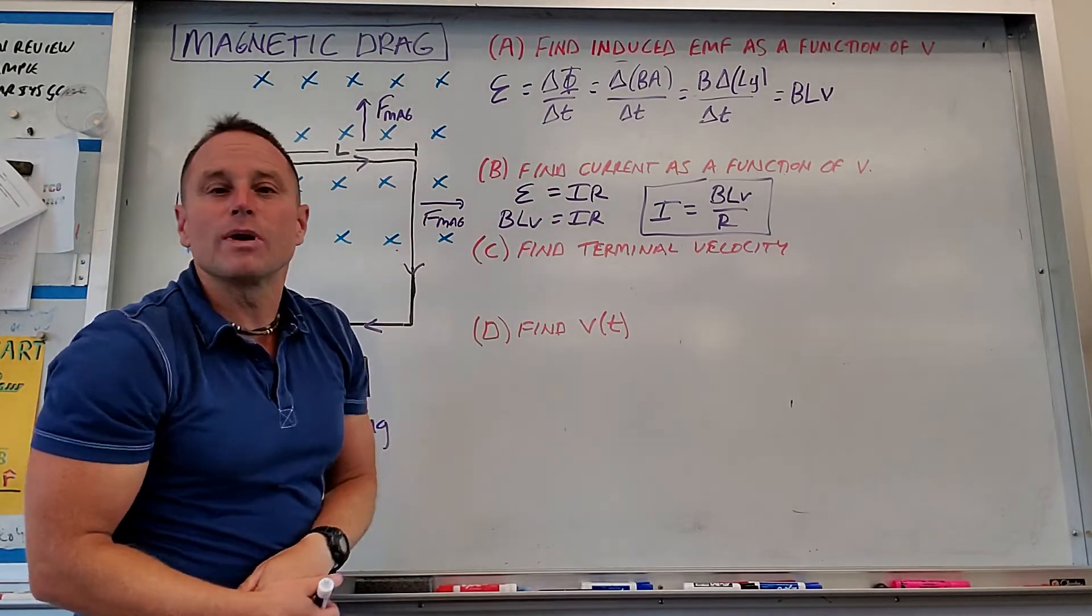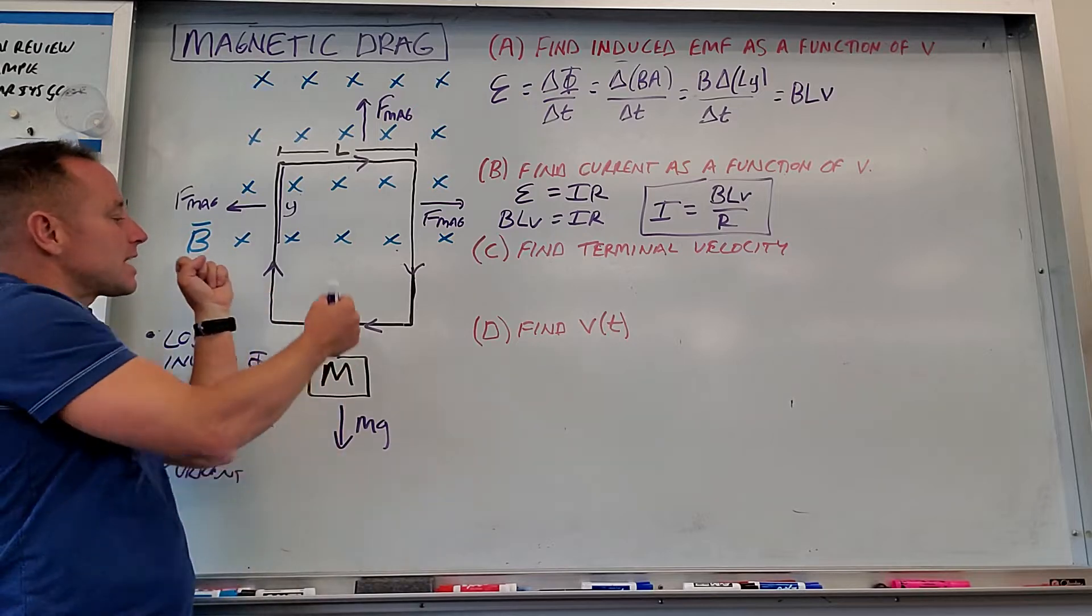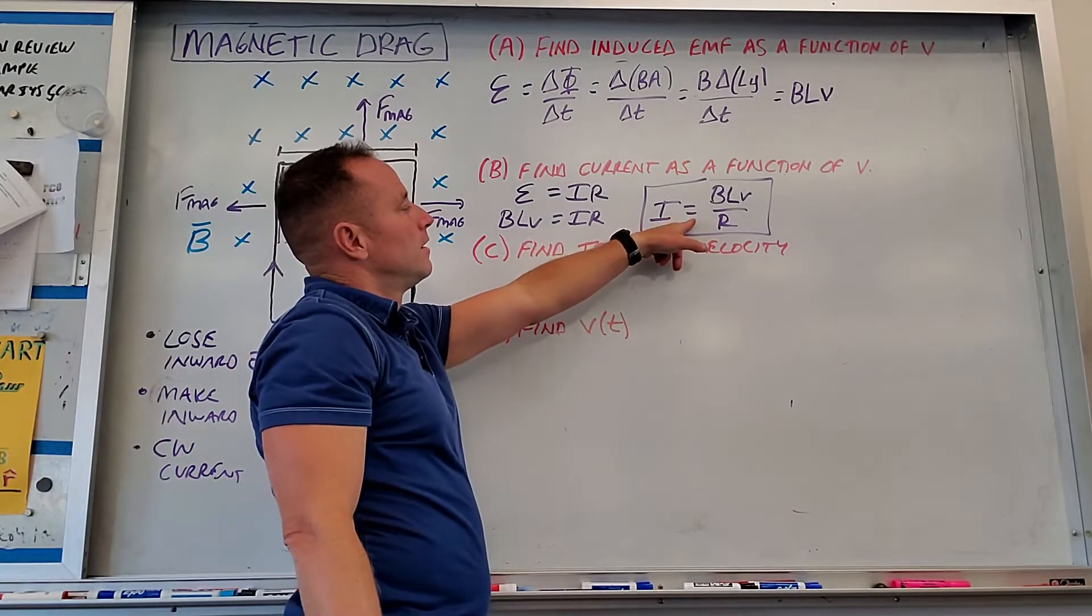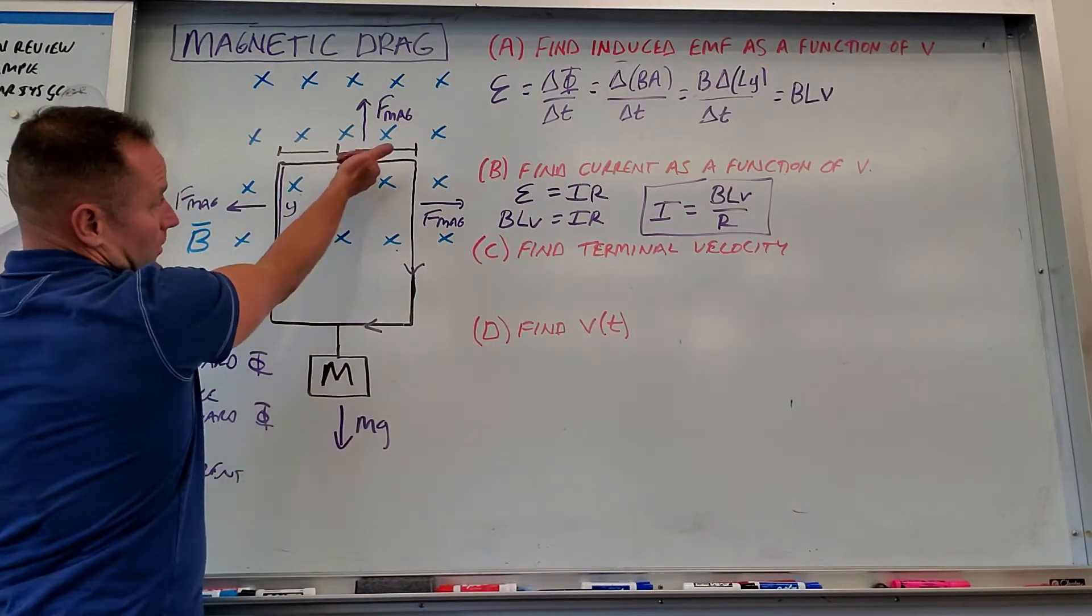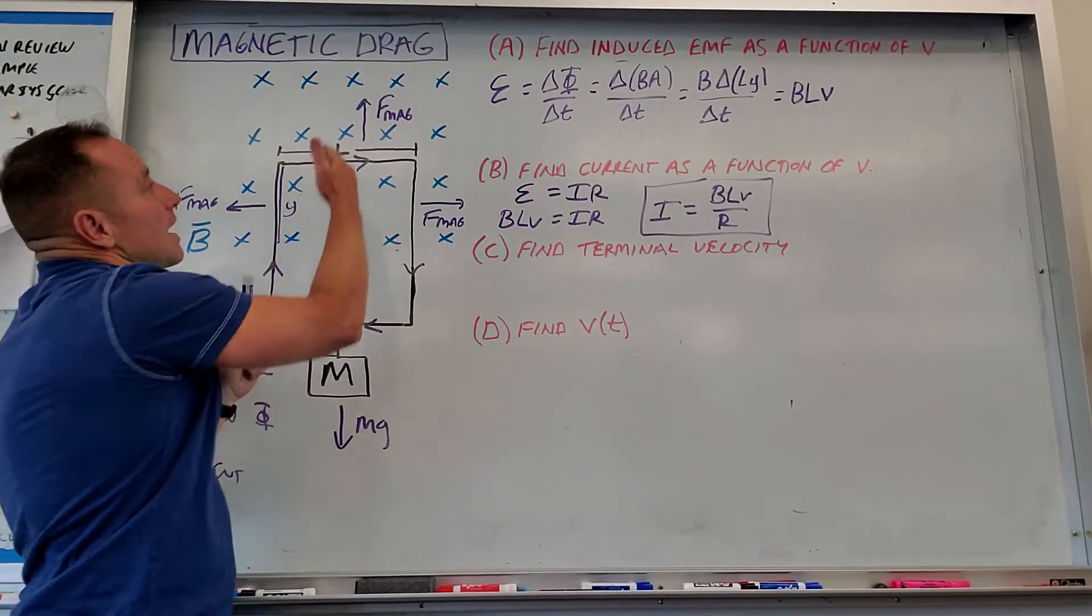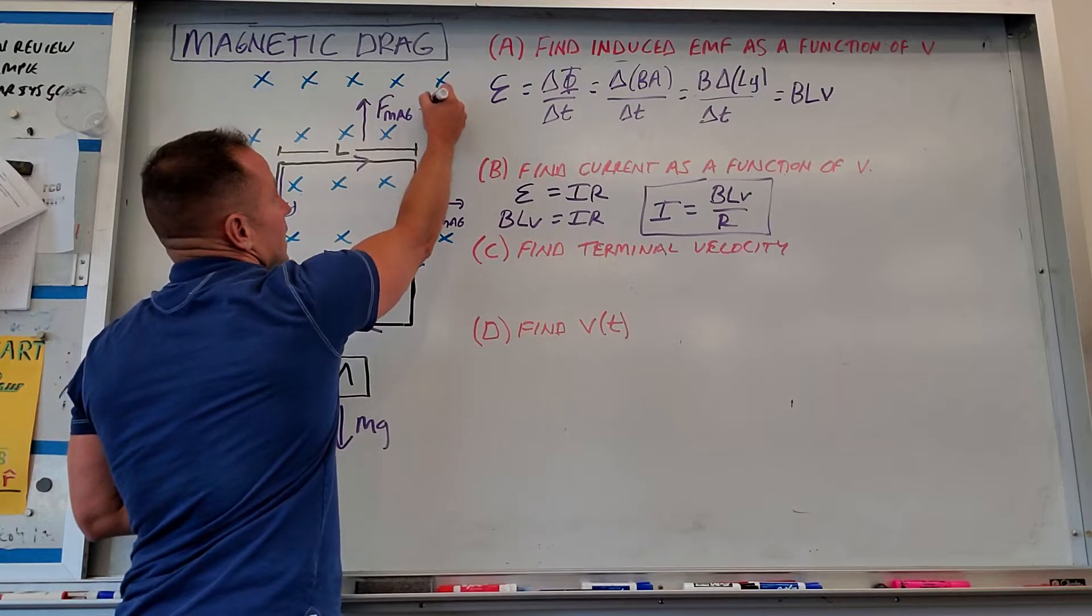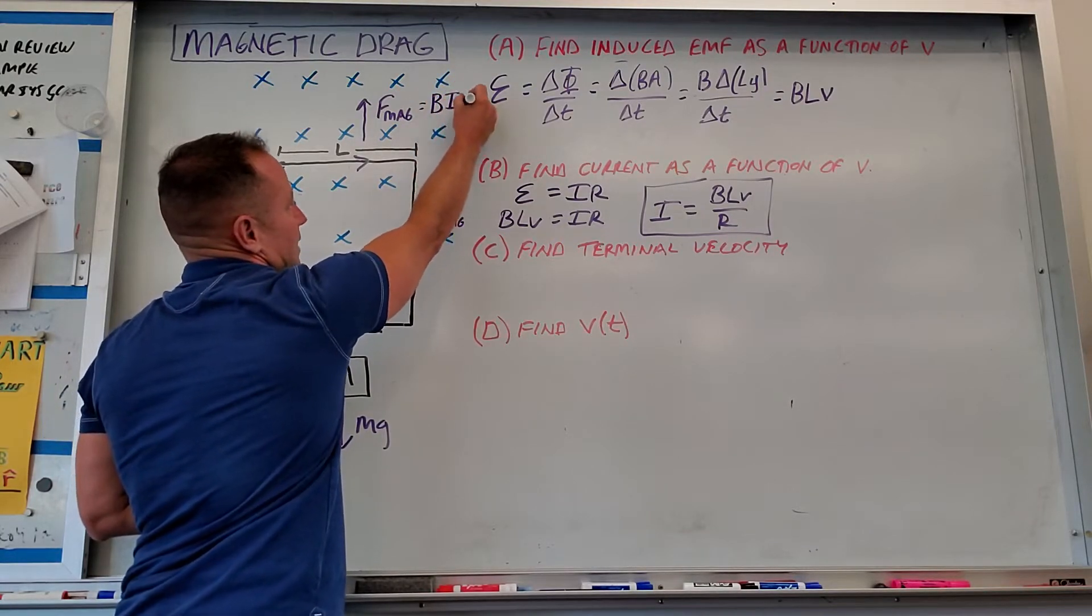All right. So next what it asks, what we're trying to find here is the terminal velocity. So what's going to happen is you let it go. Currents develop that are proportional to how fast you're going. And because of that current, you're going to get this magnetic force that's upward. And in fact, that magnetic force, since it's the force on a current carrying wire, that goes like, I remember it as Bill. Field times current times length, BIL.